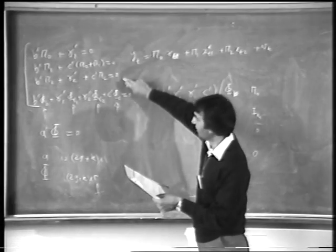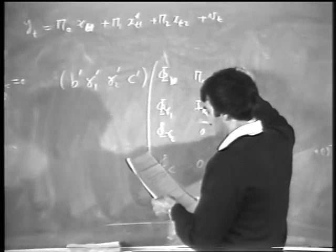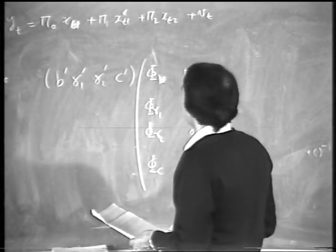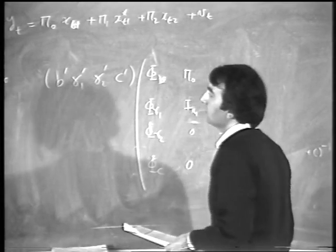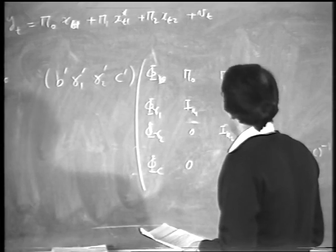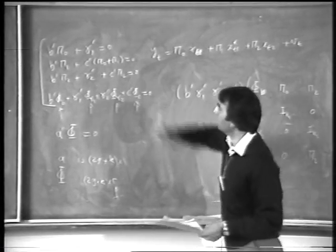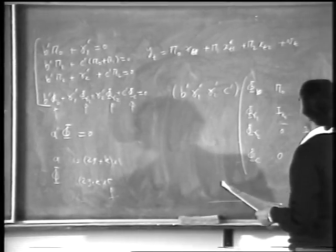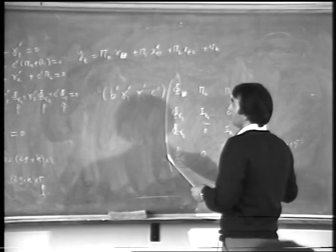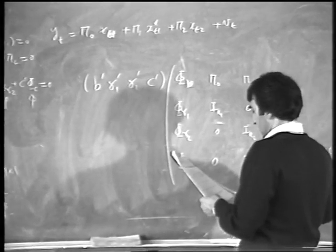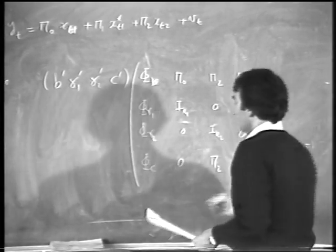Now I go to the third equation. And that I have got, the B prime becomes pi 2. That becomes zero because there is no gamma 1. The gamma 2 becomes I K2. And finally, the C would be equal to pi 2. Finally, I go to this remaining equation. That gives me pi 1, gives me zero, zero. And for C, I get pi nought plus pi 1.